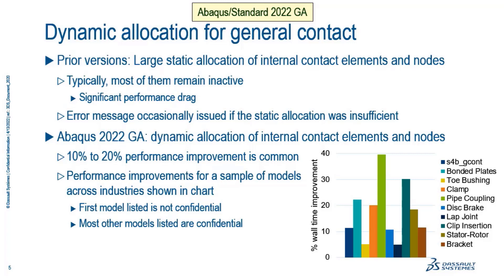We've seen 10 to 20 percent performance improvement common among a wide range of representative models with this enhancement. The performance improvements for a sampling of models are shown in this chart. The first model is a benchmark model related to powertrain. Most of the other models listed are confidential, but we think they're representative of models from many industries.